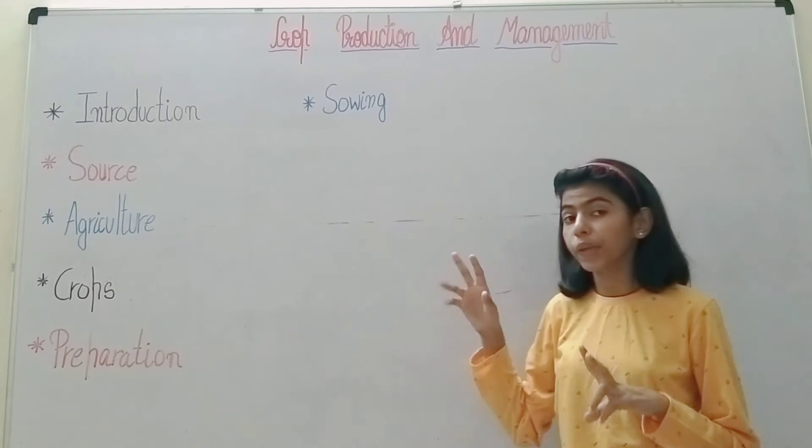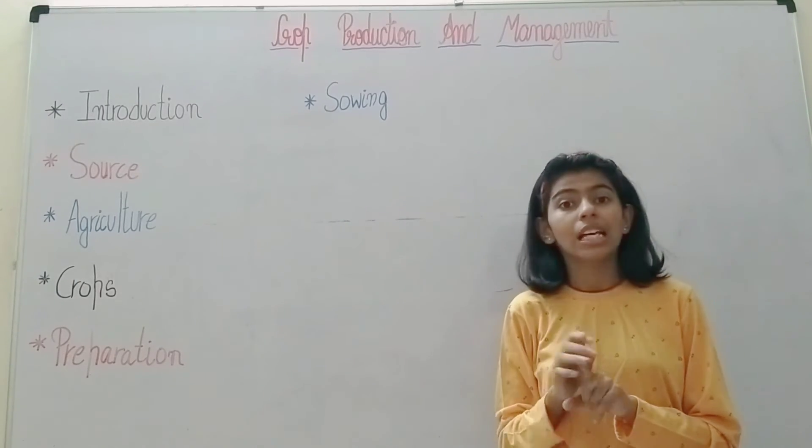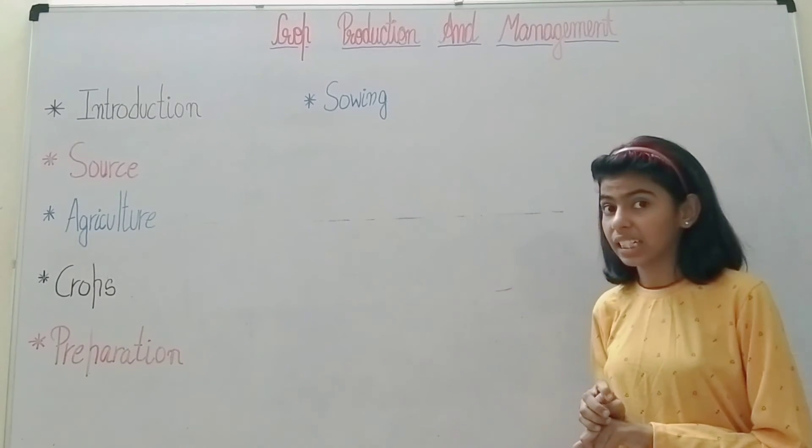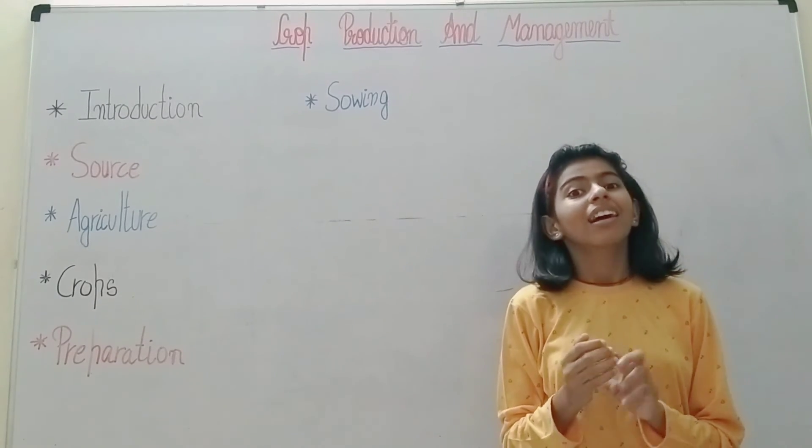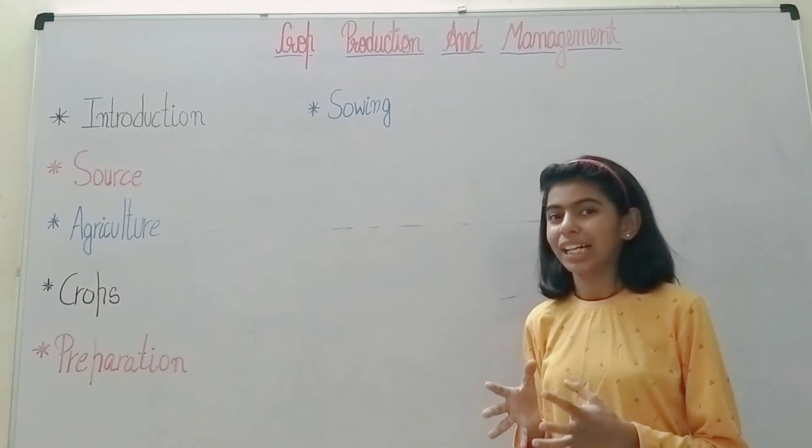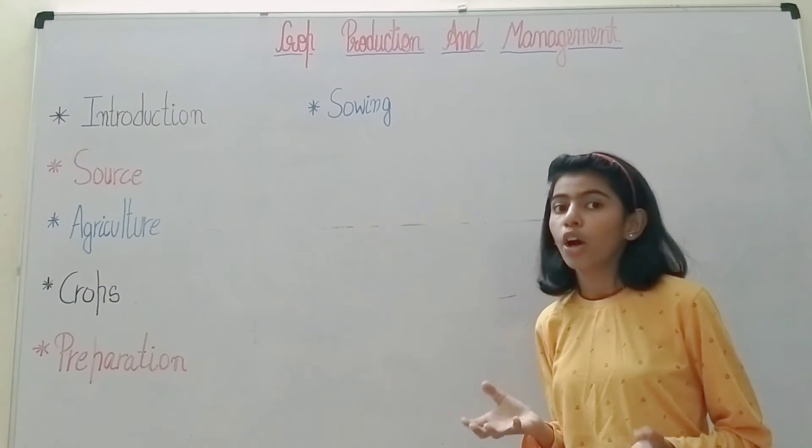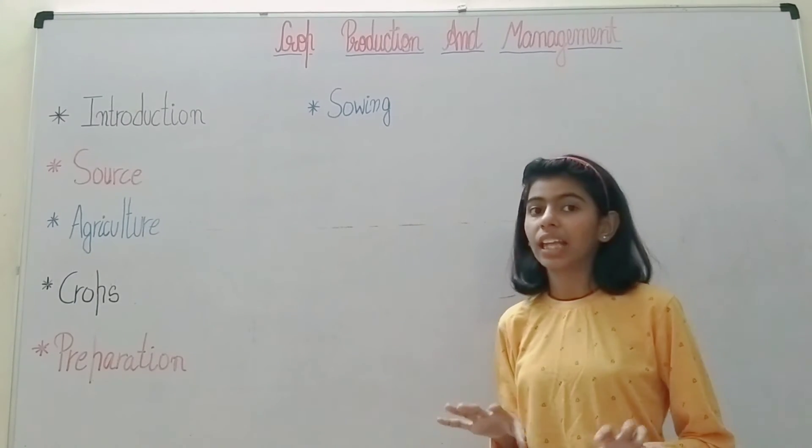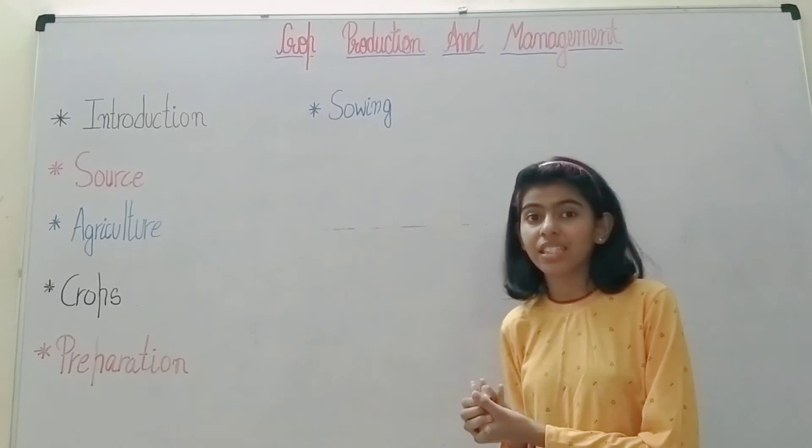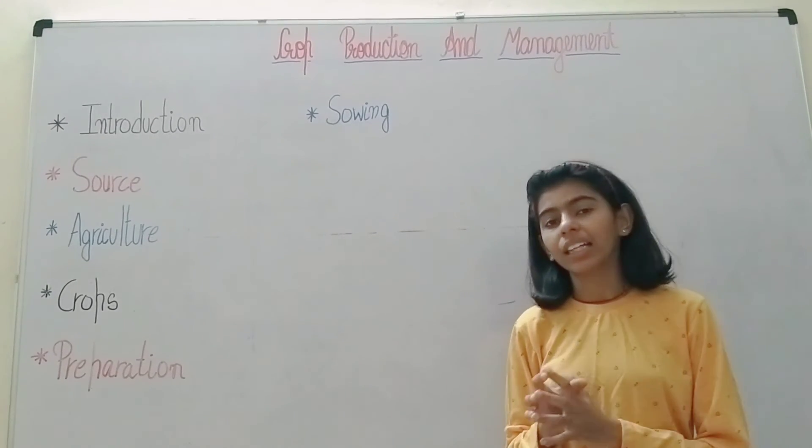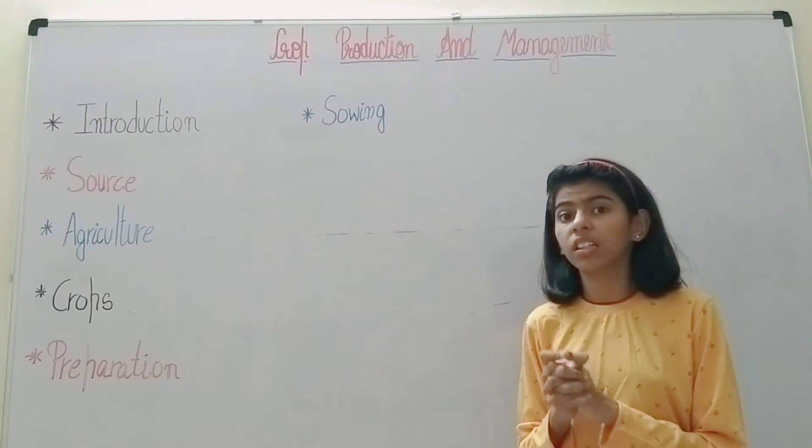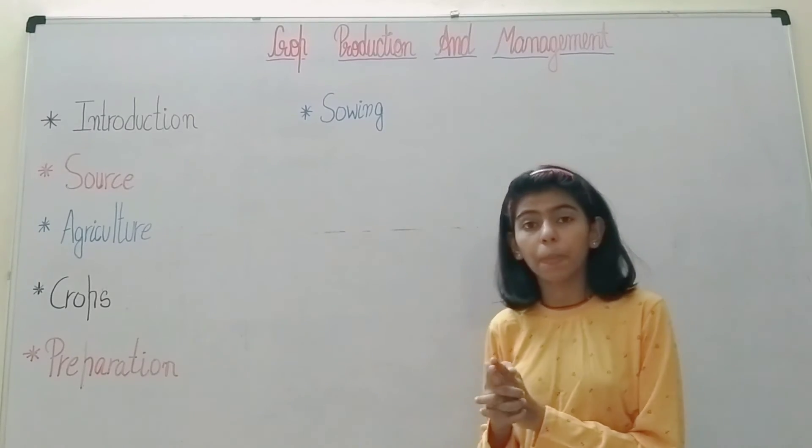Sowing includes two parts: selecting the seeds and sowing the seeds. For selecting seeds, undesirable seeds are lighter than desirable seeds. Desirable seeds sink in water and undesirable seeds float on water. This way we can separate good seeds from undesirable seeds.